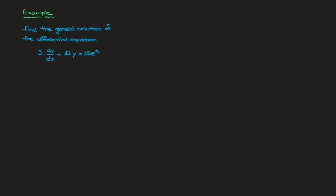The method can be summarized in three steps. Step one: we need to make sure that our differential equation is written in the form dy/dx plus p(x) times y, which equals q(x). In other words, we need to make sure that there's nothing multiplying the dy/dx.